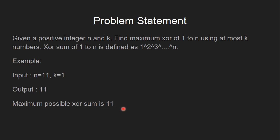Let's see another example. If n equals 11 and k equals 1, we have to find a number in the range from 1 to 11 which has maximum XOR value, but we can use maximum 1 value. So whenever k equals 1, the maximum value that we can obtain is the number n itself. So the output is 11.